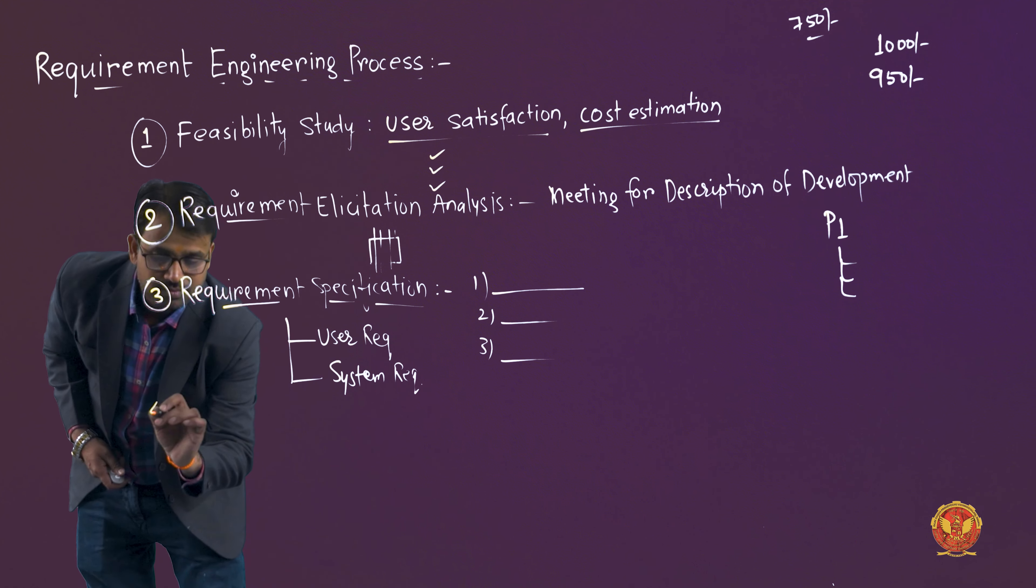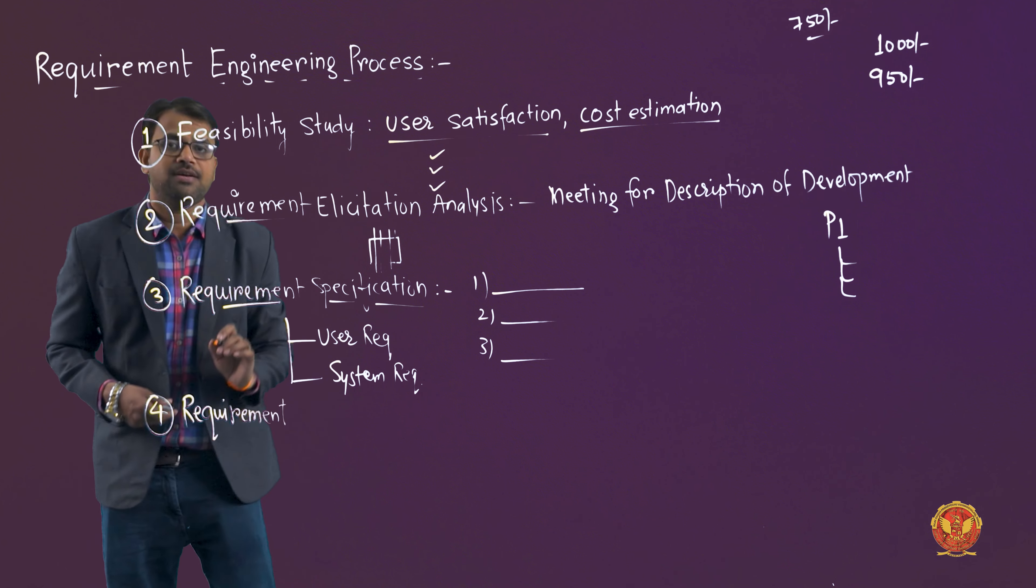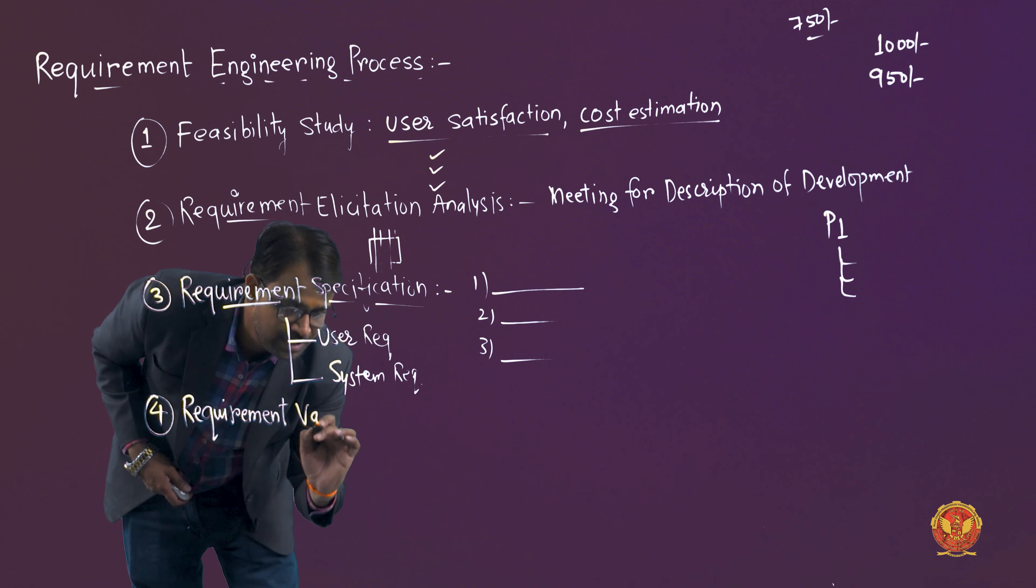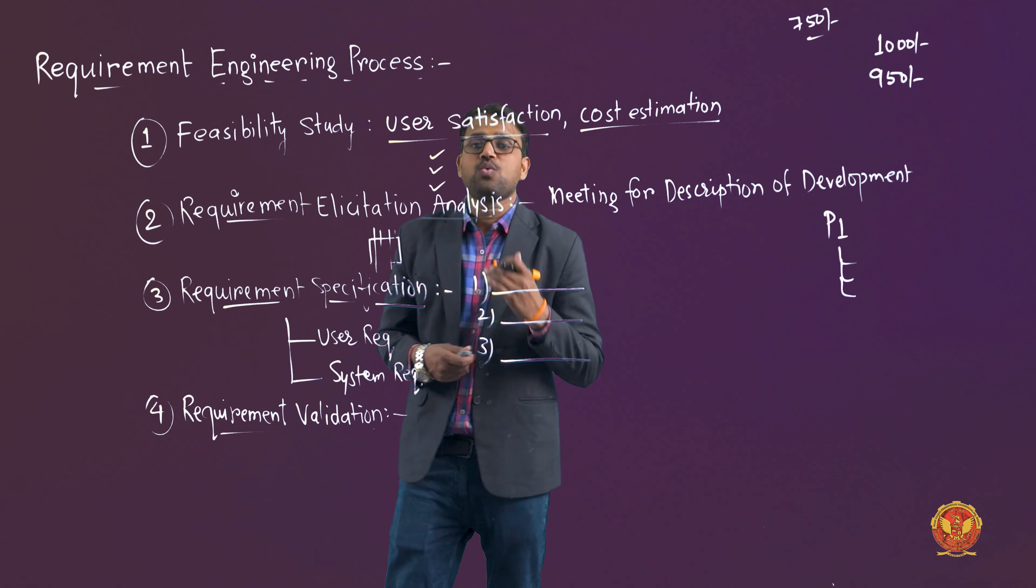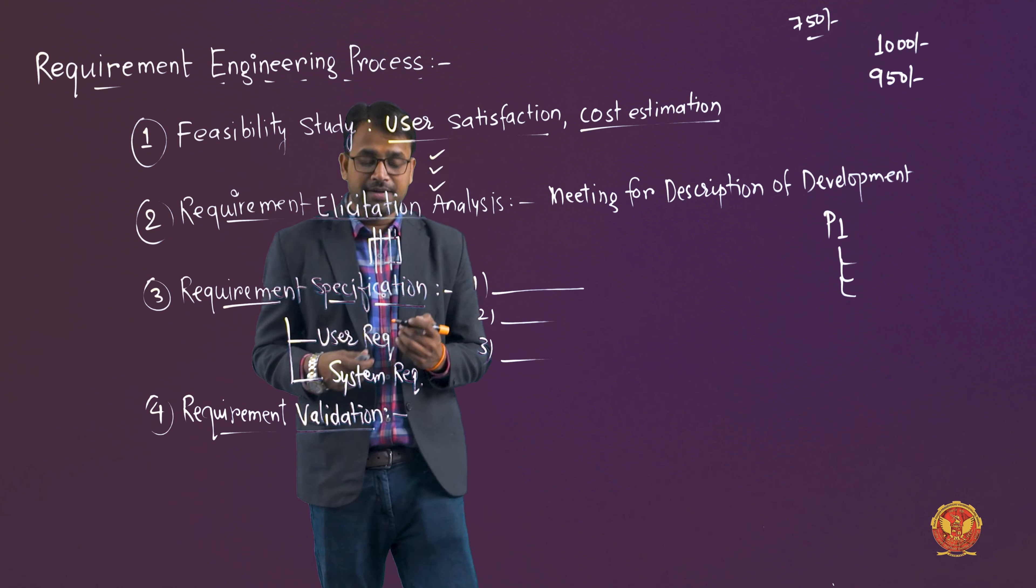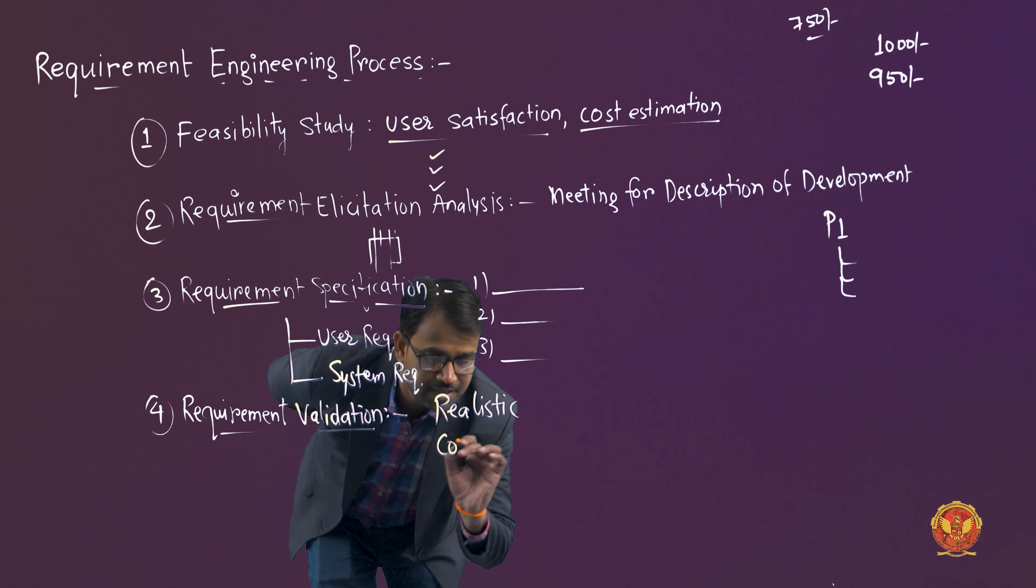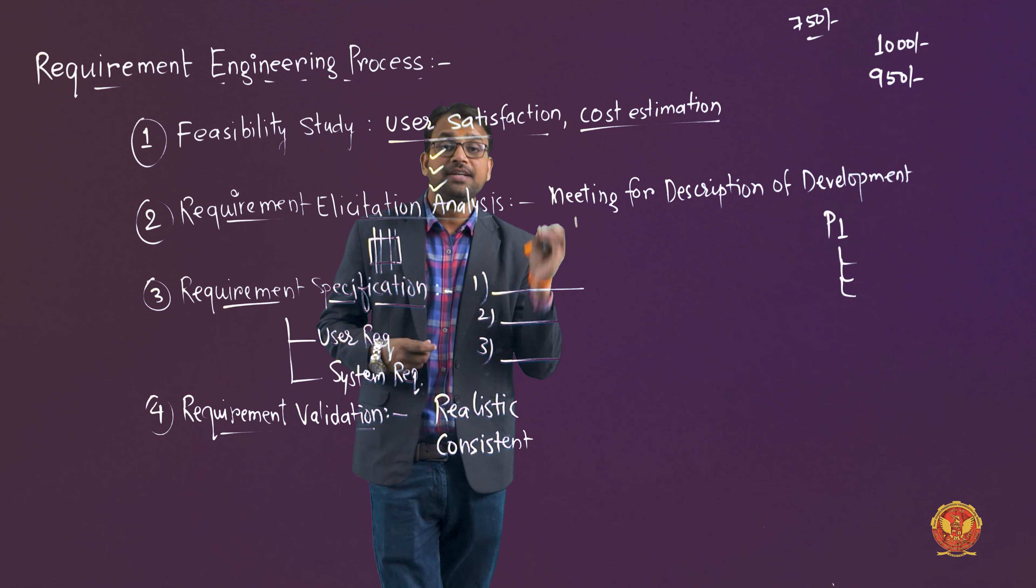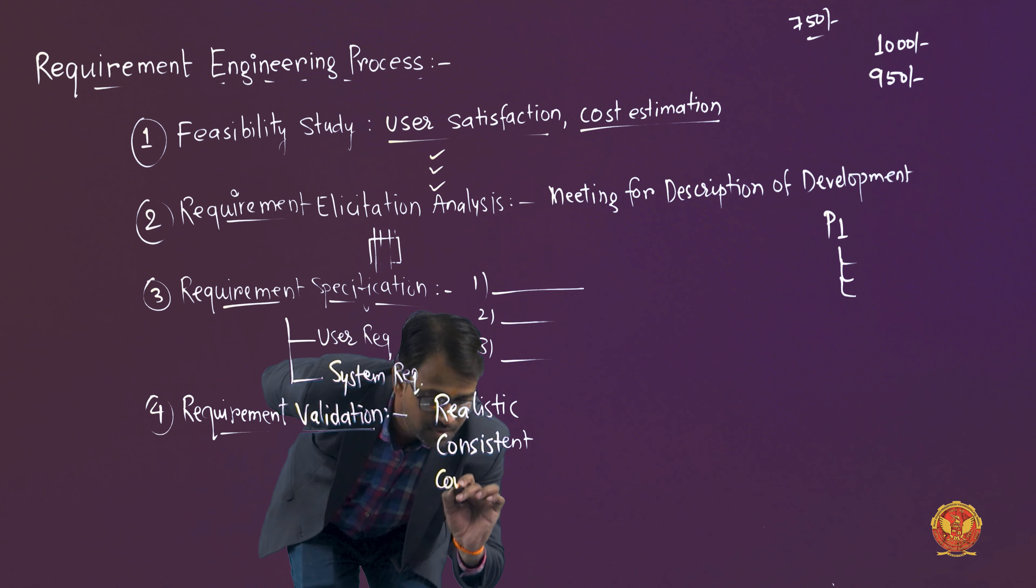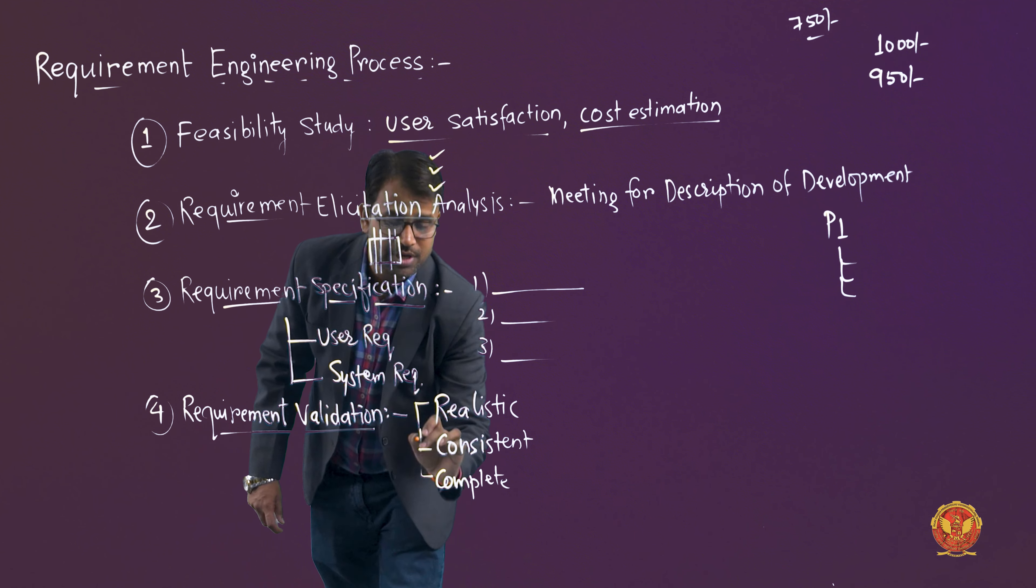Fourth point is requirement validation. Requirement validation means, as you all know, what we decided, what we did - did it happen? So validation ensures this. Requirement validation - this activity checks the requirement for realism, consistency and completeness. How realistic is it? What we thought, did we build it or not? How consistent is it? Consistent means how well it's performing - consistent performance, consistent correctness. And how complete is it? So complete, consistent and realistic - these three things are the validation criteria which are used.